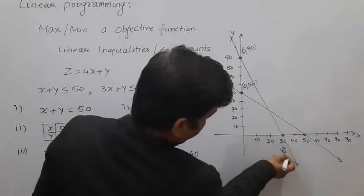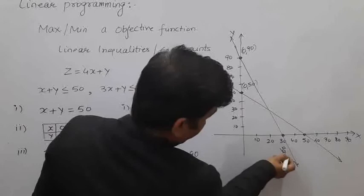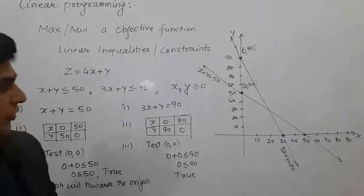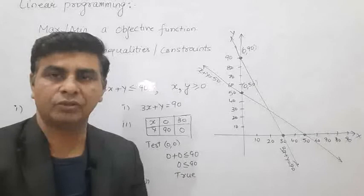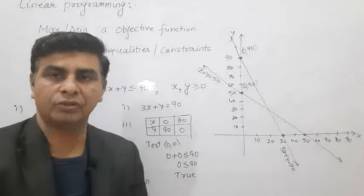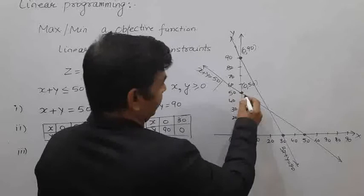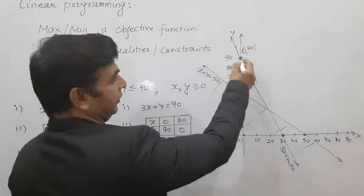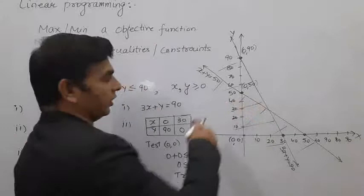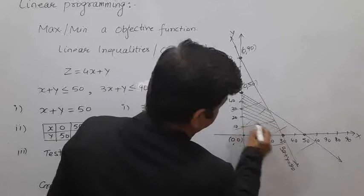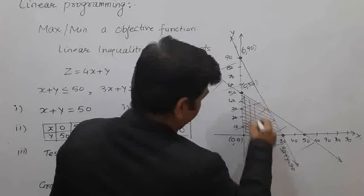We now have the two straight lines plotted for the two given inequalities. Since the origin test was true for both, we shade the region towards the origin for each line. The combined shaded region — also restricted to the first quadrant where x, y ≥ 0 — is the feasible region.